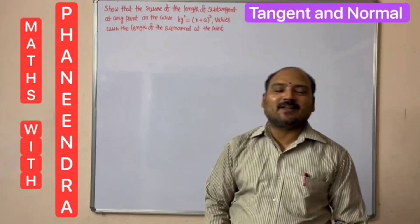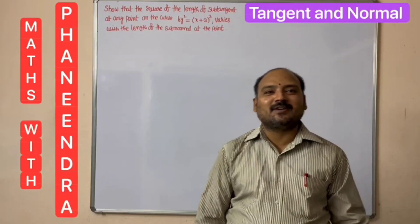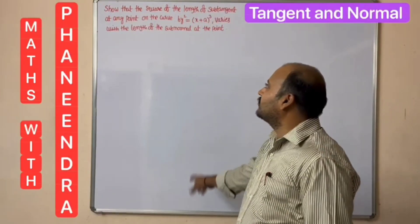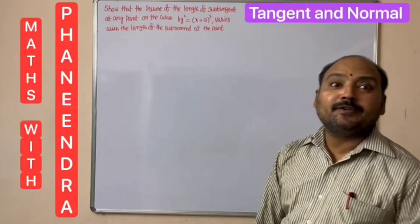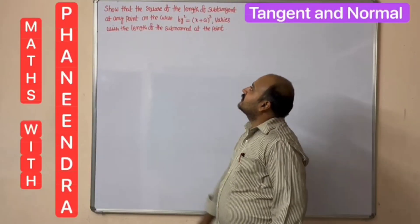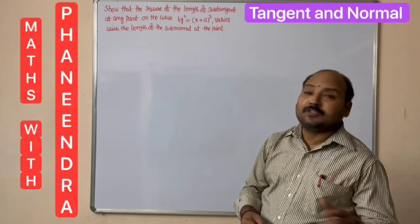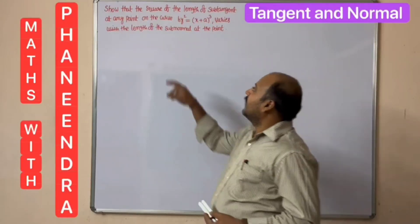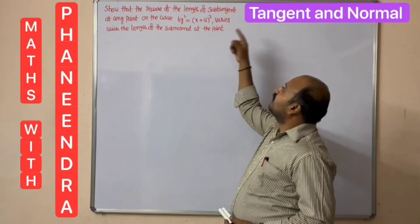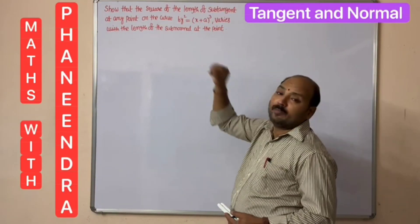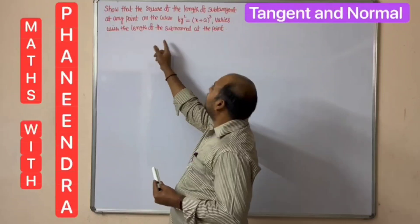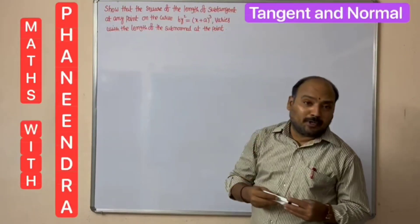Hi dear students, welcome to our channel Maths with Panindra. In this video we are discussing tangent and normals. The example problem is: show that the square of length of subtangent at any point on the curve (x + a)³ = y² varies with the length of subnormal at that point.